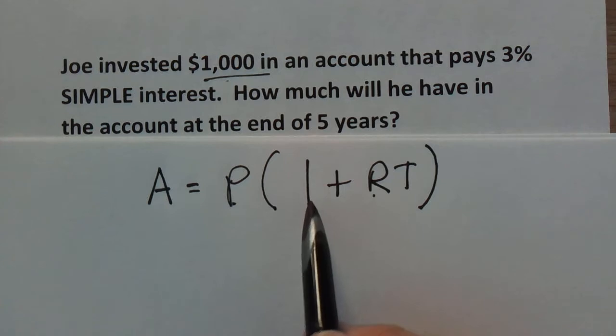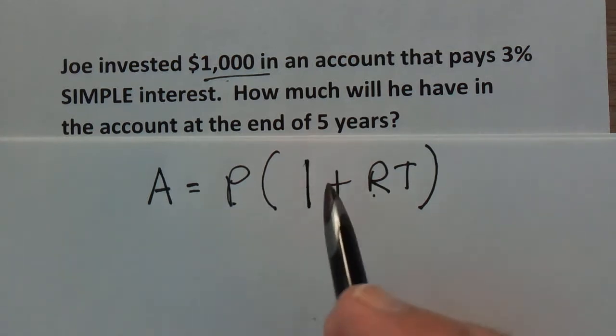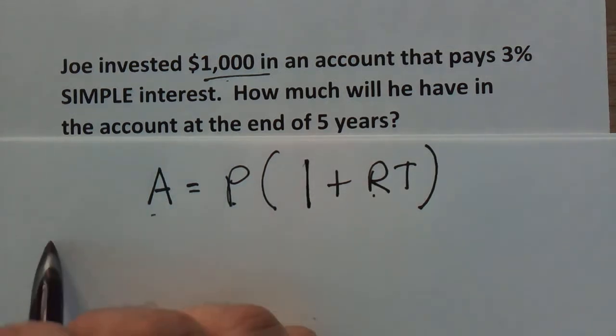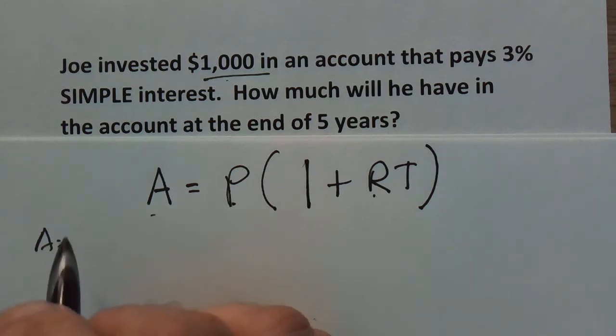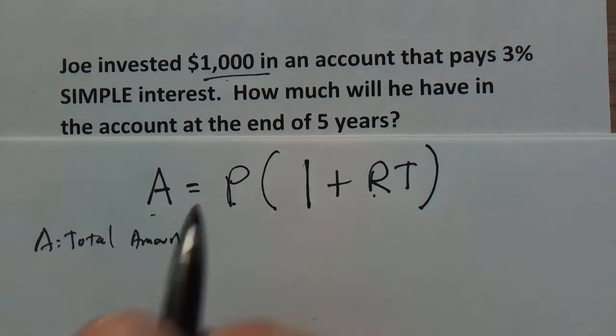The only thing here is we have a one, and A stands for the amount - the total amount in the account. So that's the total amount that we wind up with, the principal plus the interest.